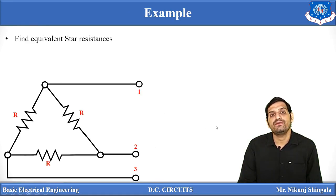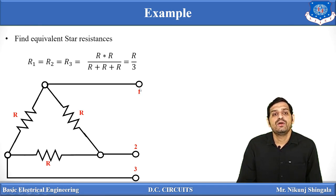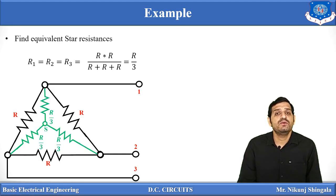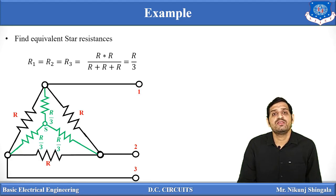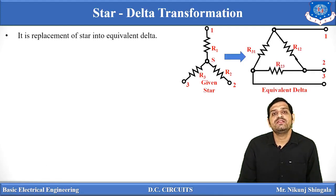Now, for a quick example: if all delta resistances have the same value R, then all star resistances will also be equal, and R1 = R2 = R3 = R/3 ohms. So if all resistances in a given delta are 50 ohms, the equivalent star resistances will each be 50/3 ohms.